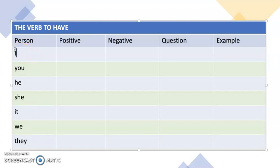I, you, he, she, it, we, they. So it's I have, you have the same, he has, she has, it has. Remember, he, she, and it are always the same.